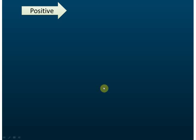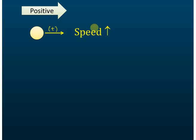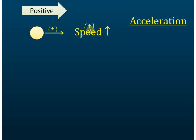Let's see this example. We have an object, and we take the direction to the right as positive. This object moves to the right, so the direction is positive. The speed increases, so the change of speed is positive. Therefore, the acceleration is positive.